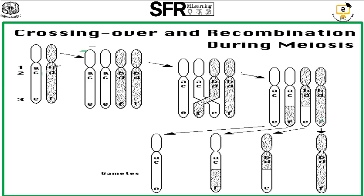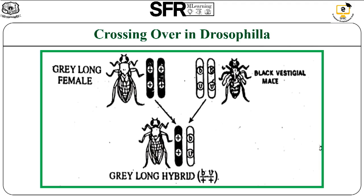Crossing over is otherwise called incomplete linkage. In the previous session we saw that complete linkage is present only in male Drosophila. Here you can see Drosophila melanogaster, the fruit fly, in which many genetic research studies have been carried out. The first one shown is a female — gray body color with long wings — and the second is a male with black body color and vestigial wings, meaning the wings are reduced to some extent. Gray body and long wings are the dominant characters, while black body color and vestigial wings are the recessive characters.